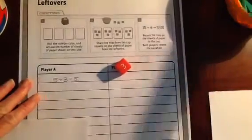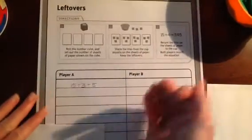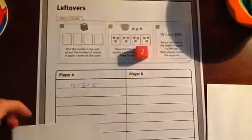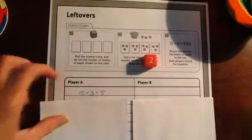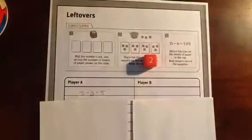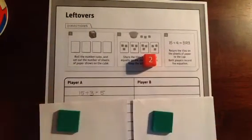So let's return the tiles to the cup. And we'll have player B take a turn. Okay, two. So we have two pieces of paper that we put out or two groups that we're splitting our tiles into. And we're going to split them.